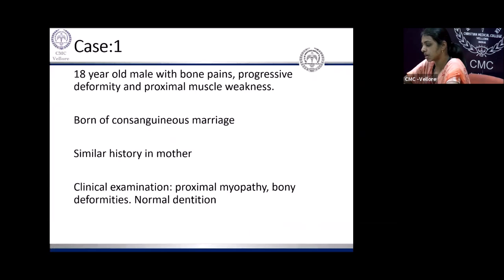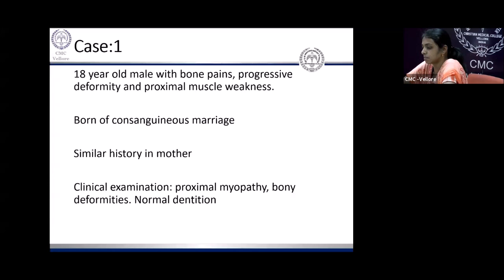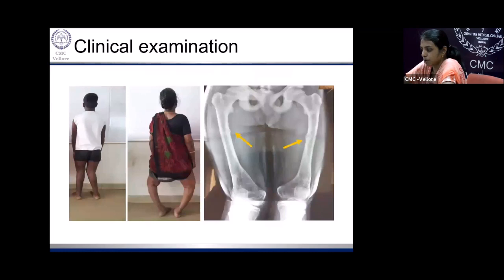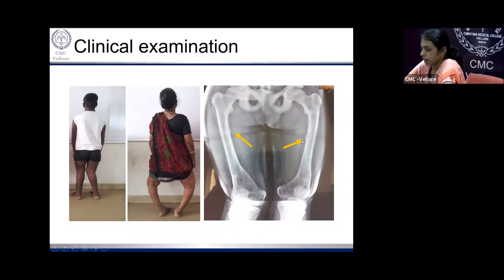Let's go through case scenarios — these are patients who actually presented to us. An 18-year-old boy presented with bone pains, progressive deformity, and proximal muscle weakness. He was born of a consanguineous marriage. His mother also had similar history of bony pains, deformity, and proximal muscle weakness. On examination, there was bony tenderness, significant proximal myopathy, and bony deformities. Clinical photographs show the boy and his mother on the right side with evident deformities. The x-ray of the boy shows translucent bands on the medial cortex, termed pseudo fractures.